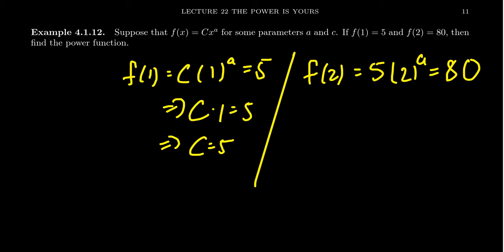To begin with, I'm going to divide both sides by 5. That's just going to be a little bit of arithmetic. Dividing both sides by 5, we end up with 16 on the right hand side. So we get 2 to the a is equal to 16.